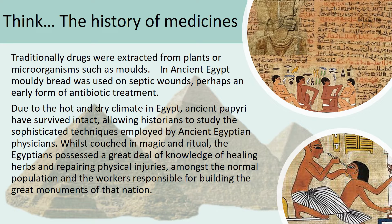You don't need to write any of this down — it just gives you a little background on the history of medicines. In ancient Egypt, they actually used mouldy bread on septic wounds. Septic means it has become infected by bacteria. That is actually one of the early examples of using antibiotic treatments. Because it was very hot and dry in Egypt, we were able to analyse discoveries and see how sophisticated these techniques were, considering they came from an ancient civilisation.